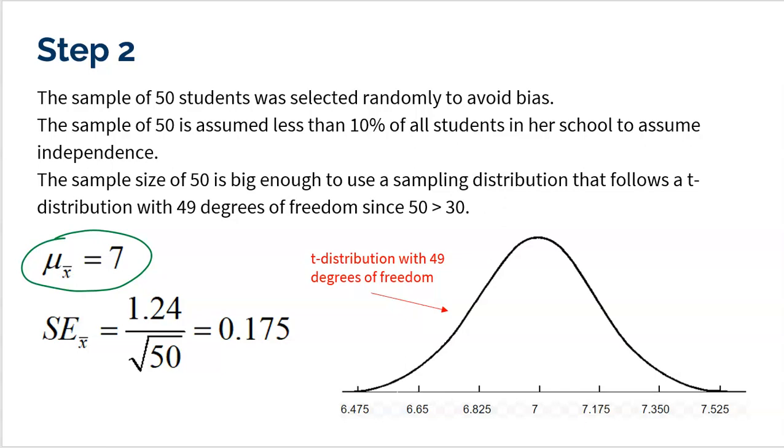And then, boy, I wish I could use standard deviation, but I'm going to have to use standard error. And the standard error is actually why this is a t-distribution, even though it looks normal. T-distributions do look normal. But the standard error is taking the standard deviation of my sample, 1.24, and dividing it by the square root of the sample size 50. And that's how I got 0.175.